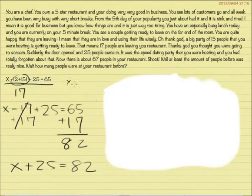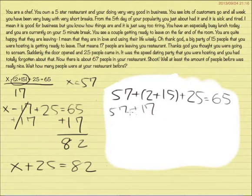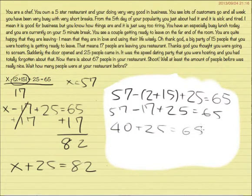So, we know that x equals 57. So, 57 plus 2 equals 65. Now, 57 plus 2 equals 65. Wait. Oh, my mistake. It is a minus. See, people make careless mistakes, but you should never be ashamed of that. So, we have that. And, so 57 minus 17 is 40 plus 25 equals 65. Now, what is 40 plus 25? That is 65. So, x does equal 57.